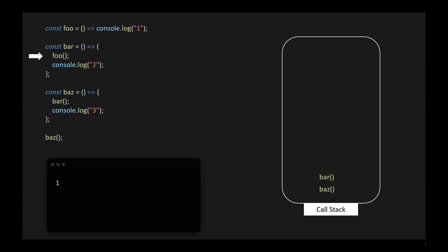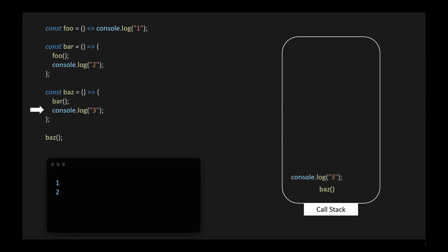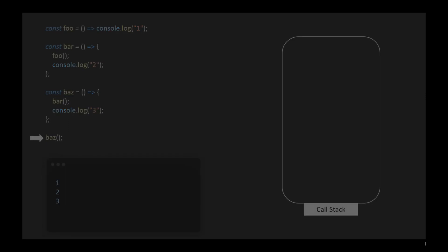Now bar is on top of the call stack. Execution of bar moves to the next line, which is the console log function. It's added to the call stack, executed, removed, and logs 2 to the console. Because bar doesn't have anything to execute, it's removed from the call stack. Now baz is on top of the call stack. Its console log is added to the call stack, executed, removed, and logs 3 to the console. Because baz doesn't have anything to execute, it's removed from the call stack.